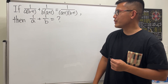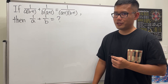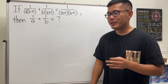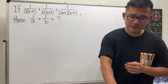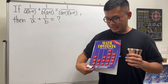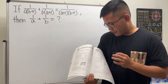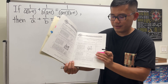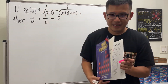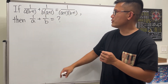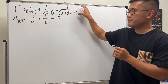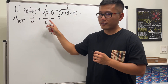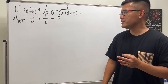Here we have a pretty scary algebra question but it's actually not so bad. I got this question from the Math D contest from the year 1999. We're given this equation and we're going to find out what 1/a + 1/b equals. Please pause the video and try this first.